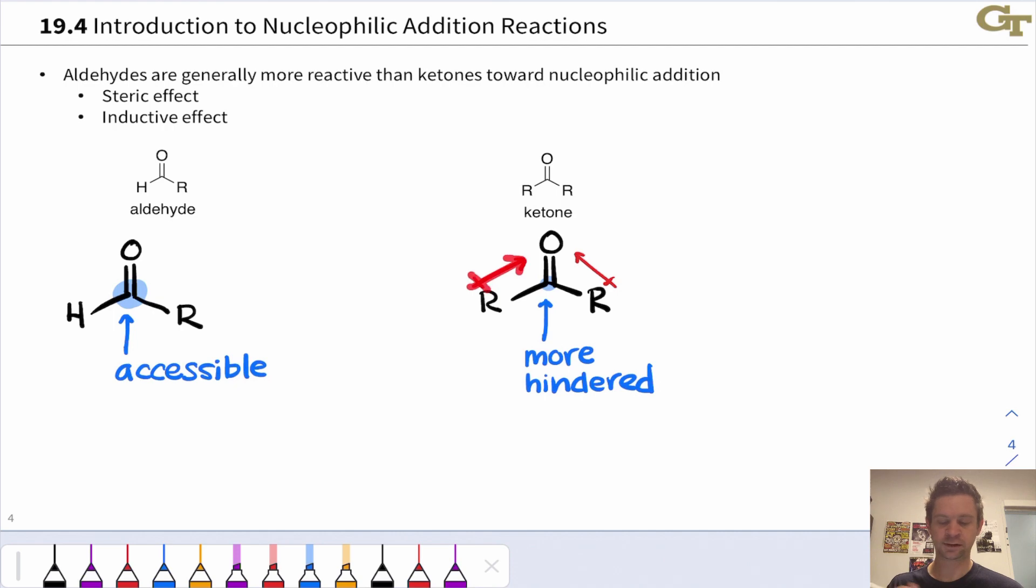The second reason has to do with the inductive effect of the additional R group in the ketone, which tends to be electron donating. Alkyl groups, for example, are definitely inductively donating. This makes the ketone's carbonyl carbon a little bit less intrinsically electrophilic than the aldehyde's carbonyl carbon. So generally aldehydes are more reactive toward nucleophiles or more electrophilic than ketones are.